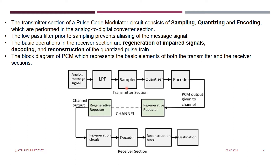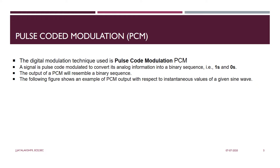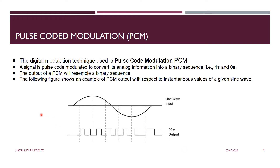Sampling is going to be done with the help of your Nyquist rate, which was discussed in your first unit. Coming to the receiver part, the receiver part is going to regenerate your impaired signal back to the original signal using a regenerator circuit. You do the reverse process — decoding first, then a reconstruction filter — and you are going to have your original signal reconstructed. PCM is a digital modulation technique where analog information is converted into binary sequence in the form of ones and zeros.